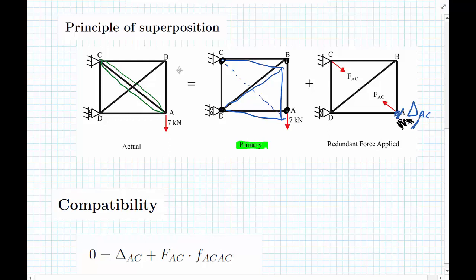One little quick note on this method is even with this actual redundant structure we would still expect some deflection in AC, but we're going to assume that we have no deflection between there. So this equal sign should actually be for this case an approximate equals sign.